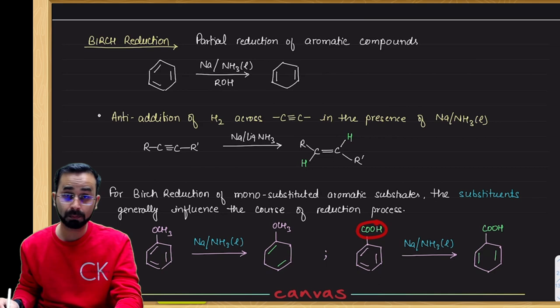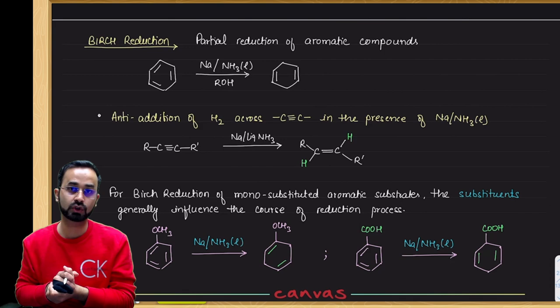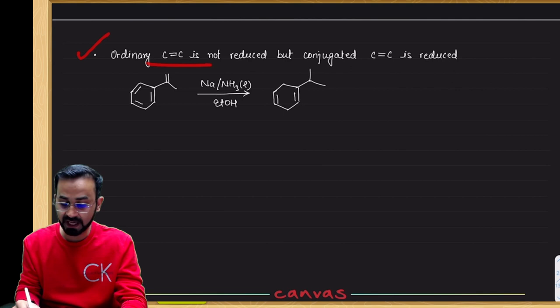When a withdrawing group is present, it will behave differently. It will not remain in the same position. The presence of the substituent also affects which double bond will be reduced.